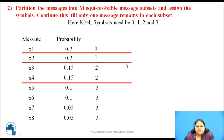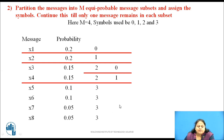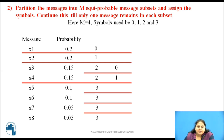Subsets 1 and 2 each consist of only one message, so no further partition is possible there. The third subset consists of 2 probabilities, so the only possible partition is into 2 parts and we assign symbols 0 and 1 as shown. The fourth subset consists of 4 probabilities, so dividing it into 4 parts gives the possible partition and we assign the symbols as shown.